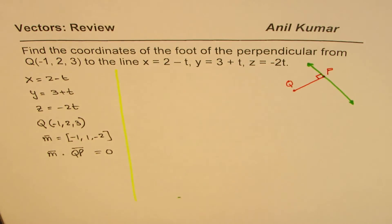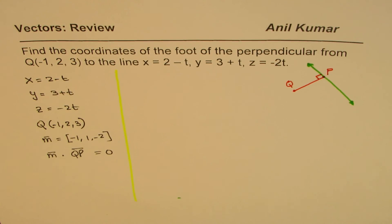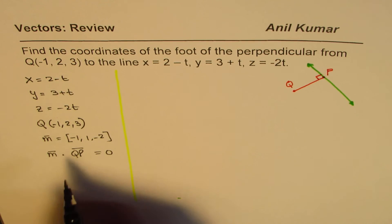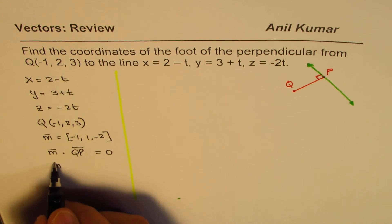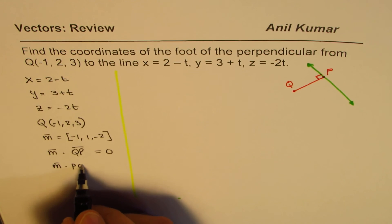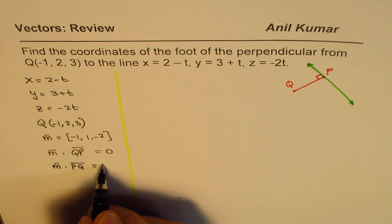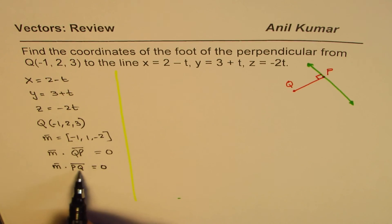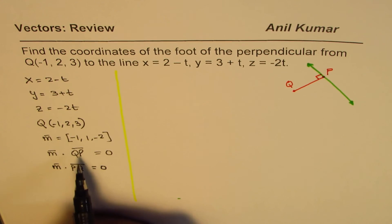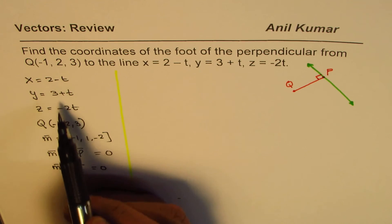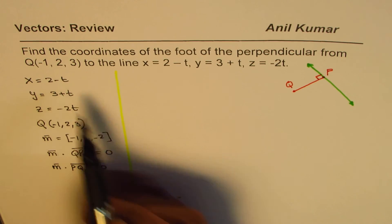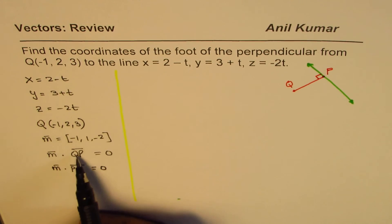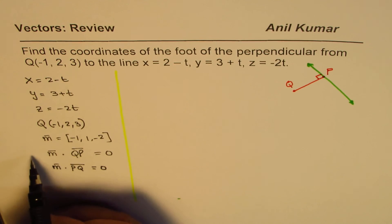So that's how we are going to solve it. Now this equation, you could write either way, dot product, we could write it just as m dot PQ also, same thing, equals to 0. I have purposely written PQ, since I am going to use this point, which is our general point P. So we will use P minus Q.